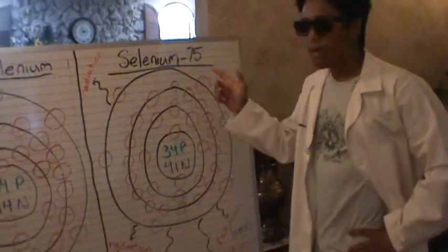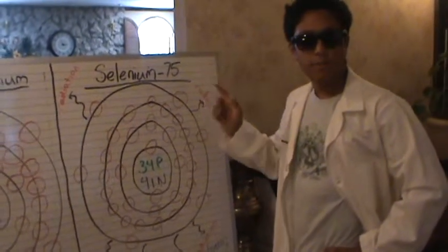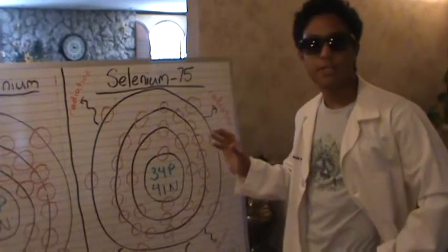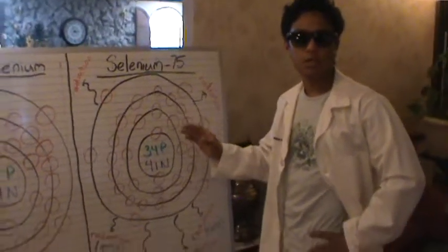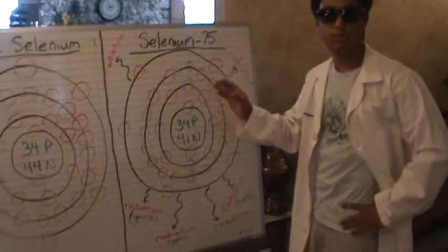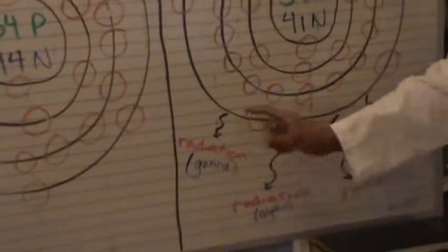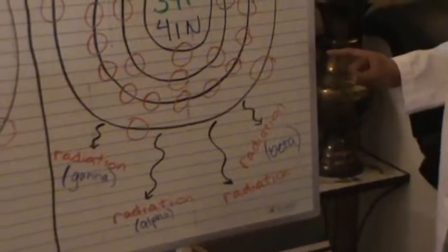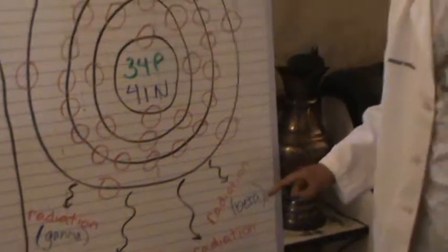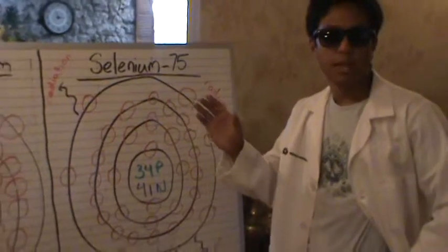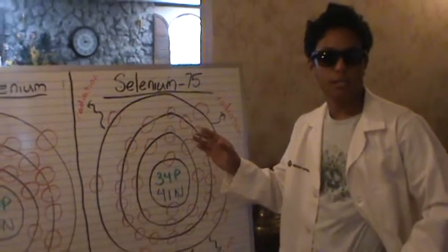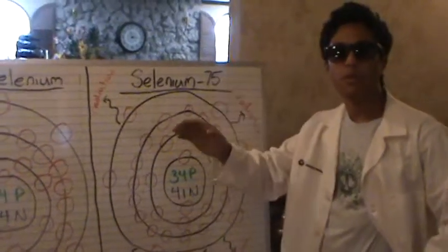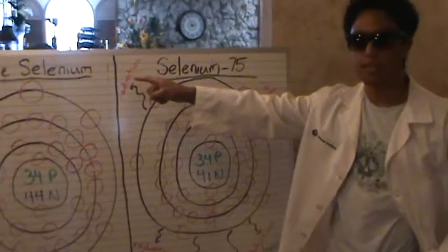The fact that selenium 75 has a different number of neutrons means that the nucleus is unstable. This instability causes the nucleus to decay and emit various forms of radiation, such as gamma radiation, alpha radiation, and beta radiation. These forms of radiation emitted due to the different number of neutrons are what make radioactive selenium 75 different from the boring old selenium element.